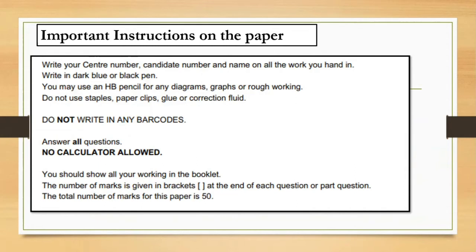These are the important instructions you can find on the paper for mathematics. Write your center number, candidate number, and name on all the work you hand in. Write in only dark blue or black pen. You may use an HB pencil for any diagrams, graphs, or rough working. Do not use staples, paper clips, glue, or correction fluid. Do not write in any barcodes.